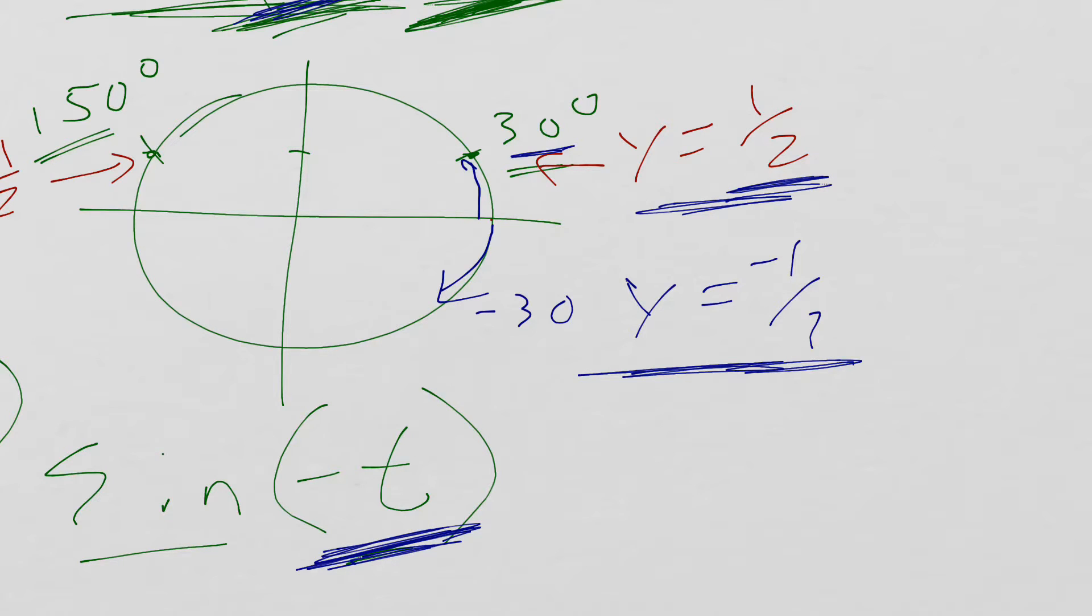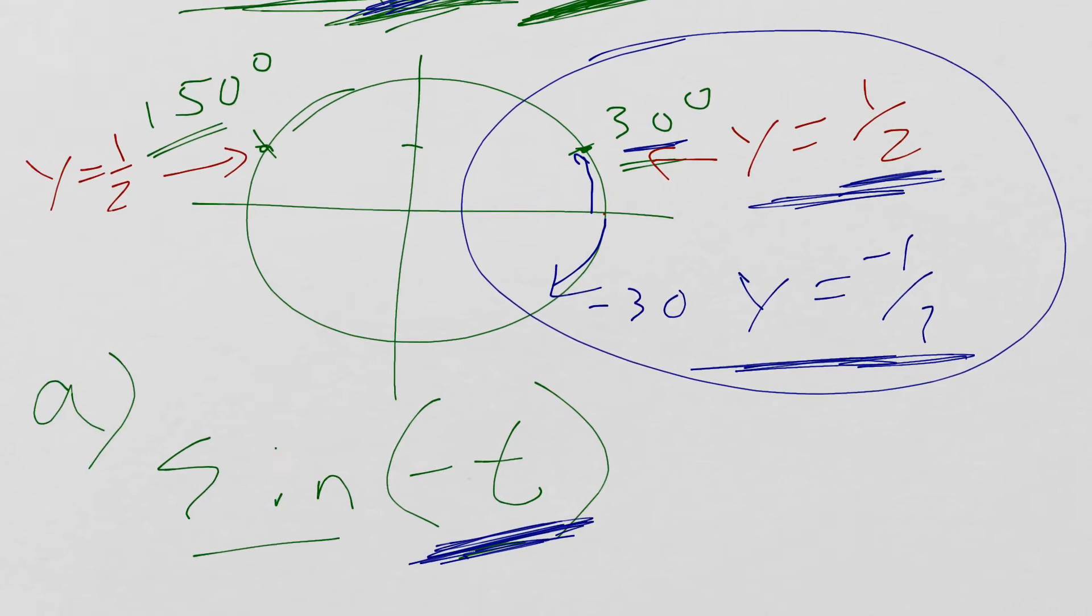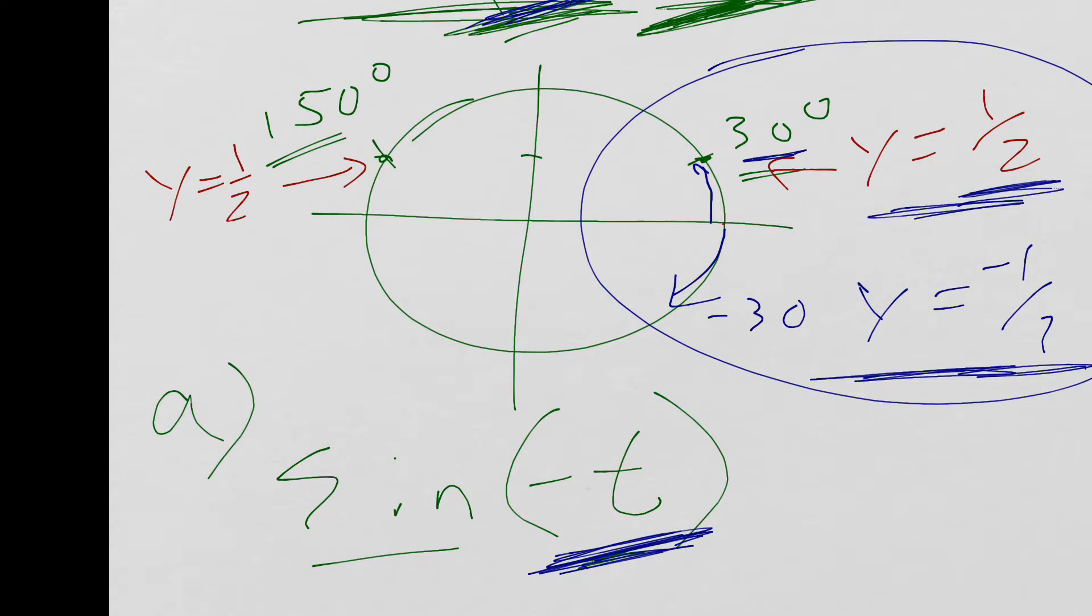Alright. Well, that works for this. That's what happens in this case. What happens if our angle was 150? Okay. So if I go positive distance 150.